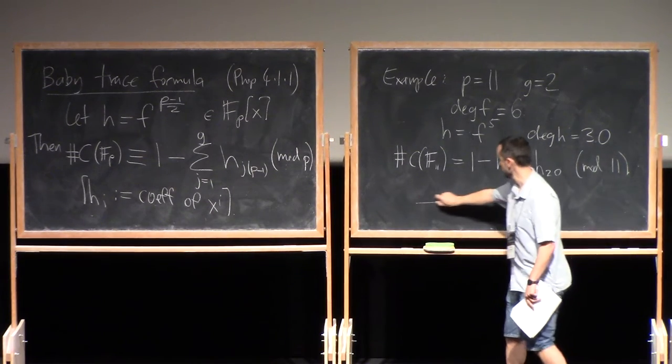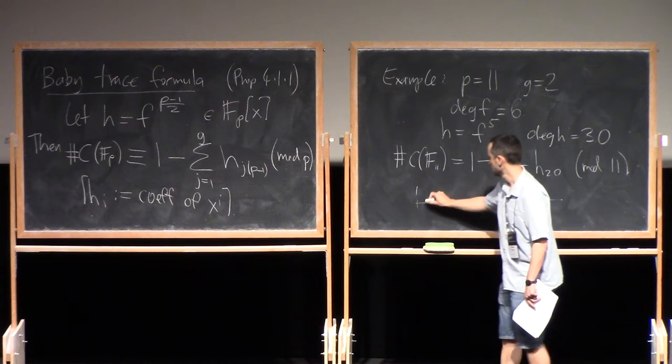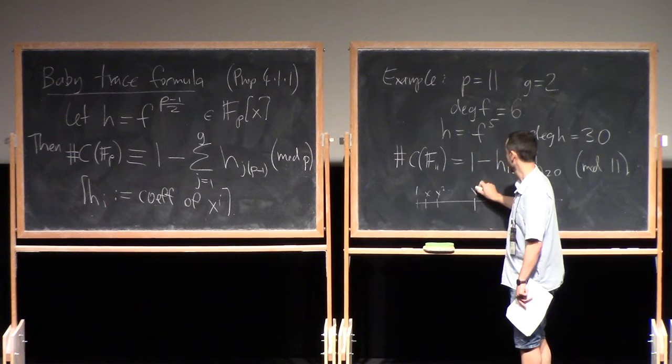Okay, so if I write out all the coefficients of H, this is going to be constant term, this is X, X squared, etc. X to the 10, X to the 20, X to the 30.